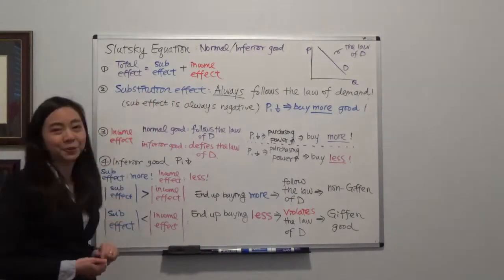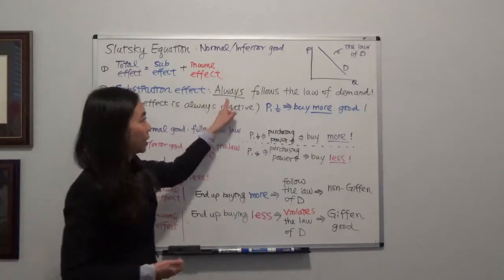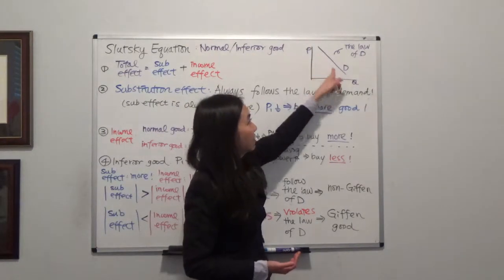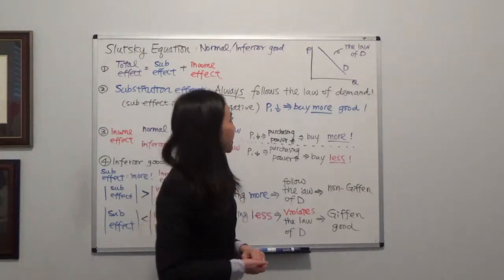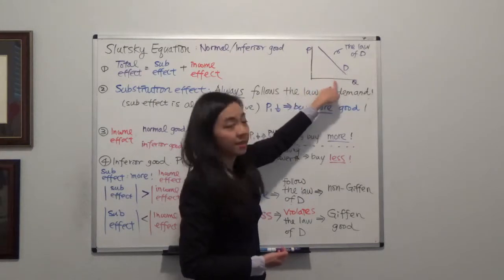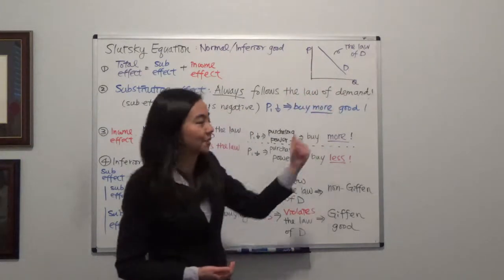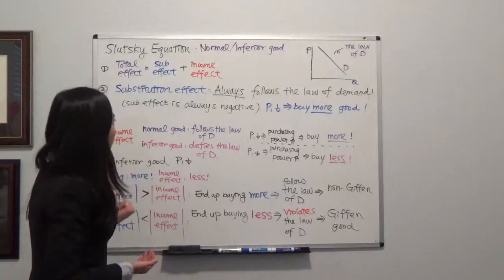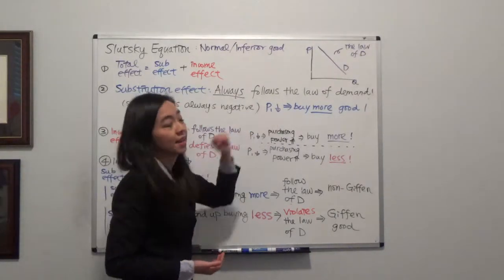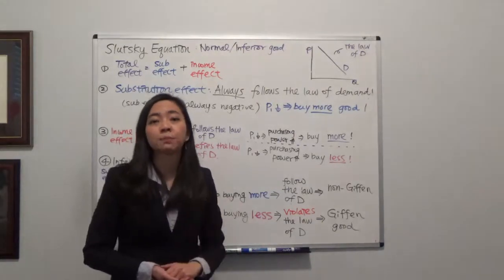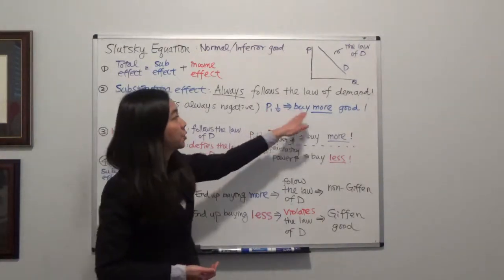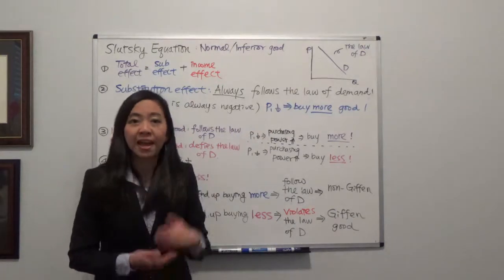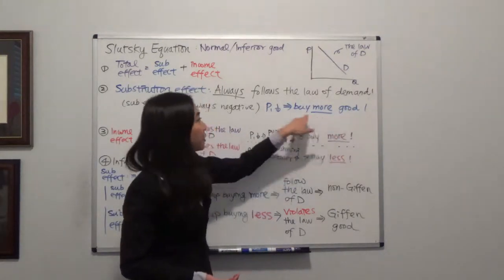First, remember that substitution effect will always follow the law of demand. The law of demand is simply that we have a negatively sloped demand curve, meaning if the price of a good goes down, quantity demanded for that good goes up and vice versa. So if the price of good one goes down, substitution effect tells you good one has become relatively cheaper, so you should buy more good one to replace good two. When price goes down, substitution effect asks you to buy more — it always follows the law of demand.